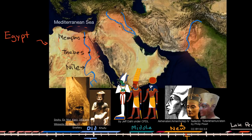The tributaries of the Nile River start even south of this picture, and the water flows northward, eventually reaching the Mediterranean Sea through its delta. The delta — where a river opens into the sea — is called a delta because the rivers branch out into an upside-down triangular region, which looks like an upside-down Greek letter delta. That's why river deltas are called that.